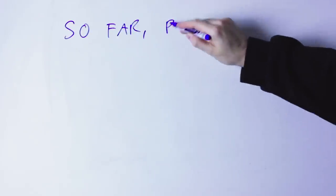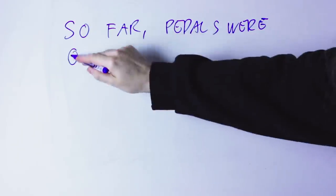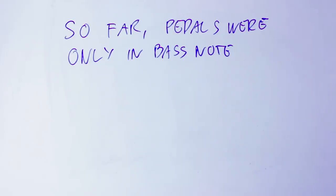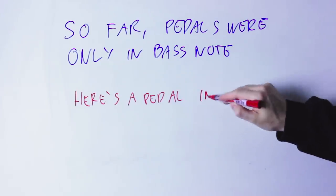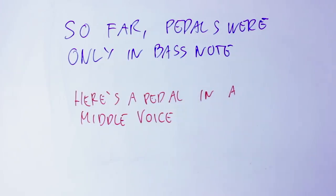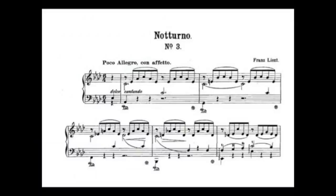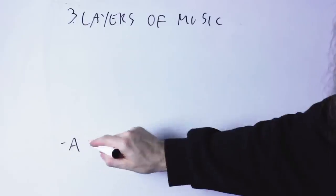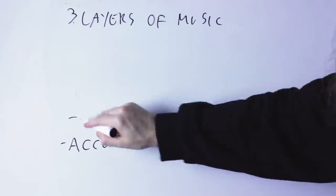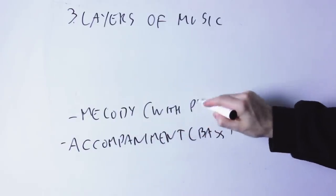So far all the examples have held the pedal point in the bass note, meaning that the lowest note is held and the chords change above that held note. But a pedal point does not need to be on the bass note. One of the most classical and definitely one of my favorite examples of a pedal point that is in between — not the highest and not the lowest note — is this piece by Franz Liszt. Notice how you have three layers of music: the accompaniment in the left hand, the arpeggio in the right hand, and the pedal point that starts the melody in between the accompaniment and the arpeggio.